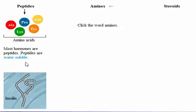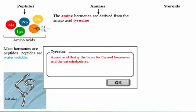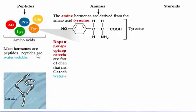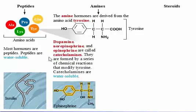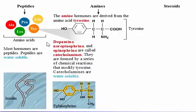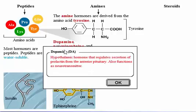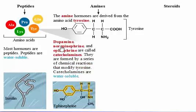The amine hormones are derived from the amino acid tyrosine. Dopamine, norepinephrine, and epinephrine are called catecholamines. They are formed by a series of chemical reactions that modify tyrosine in successive steps. Catecholamines are water-soluble. We will study the synthesis of epinephrine in detail in the next pages.